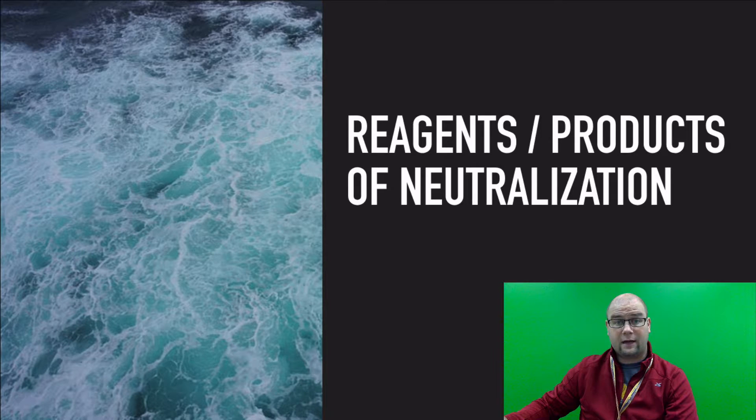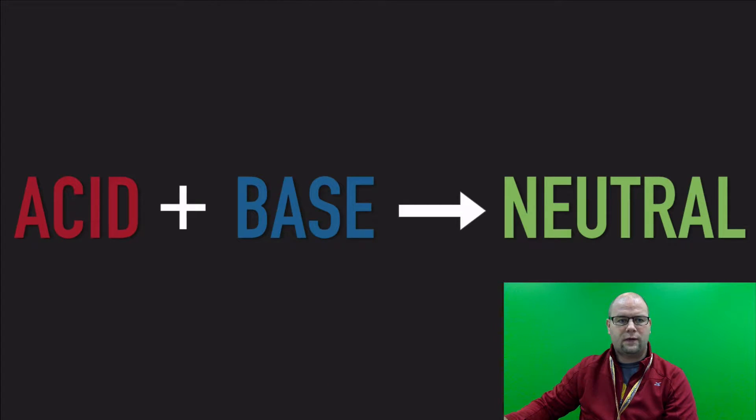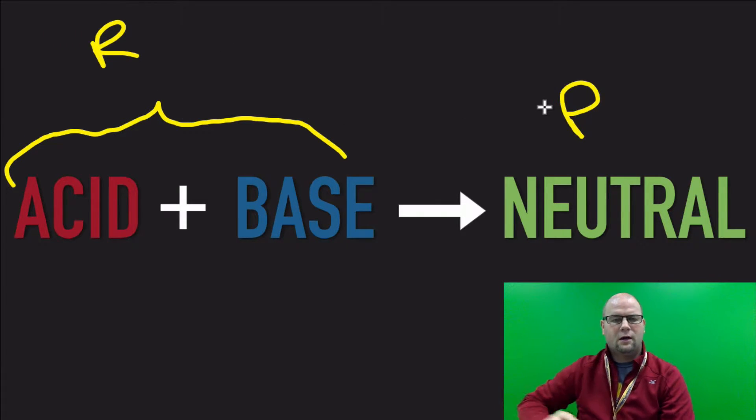So in every reaction you have reagents and you have products. Reagents are the things that react, and products are what they produce or what they make. In a neutralization reaction, there are two reagents, and they're an acid and a base. These are our reagents, and this is our product. Our product is going to be neutral. So since we're neutralizing, we take an acid and we add a base, and we make neutral.